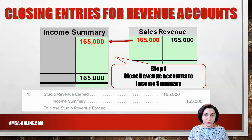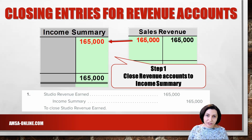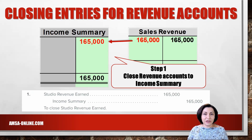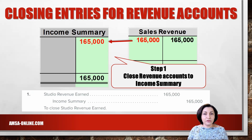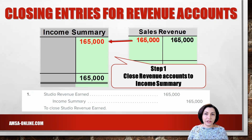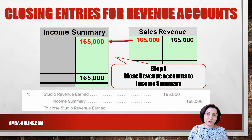Let's look at the T-accounts for revenue and expenses. All expenses are on the left or debit side of the expense T-accounts, and sales revenue is on the right or credit side of the revenue T-account. Revenue has a credit balance, so to close the account it must be debited for its current balance and credited to income summary. The closing entry for revenues is to debit sales revenue for its balance of $165,000 and credit income summary for the same amount. The balance in the revenue account is now zero, and income summary has a credit balance of $165,000.